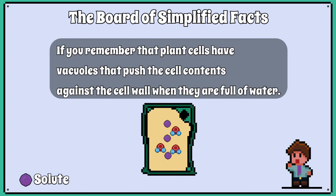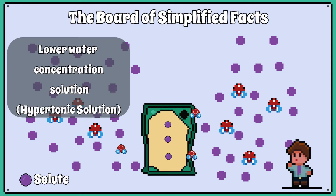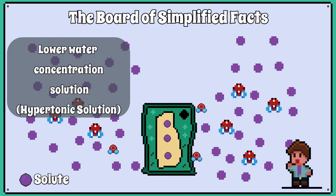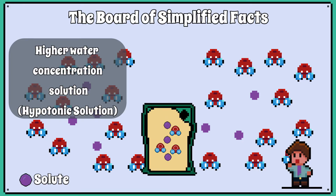If you remember that plant cells have vacuoles that push the cell contents against the cell wall when they are full of water, then if you place a plant cell into water that has a lower water concentration than the inside of the cell, the water will leave the cell via osmosis and cause the vacuole to pull away from the cell wall. The vacuole will refill with water once you place it back into a solution with a higher water concentration than the inside of the cell.